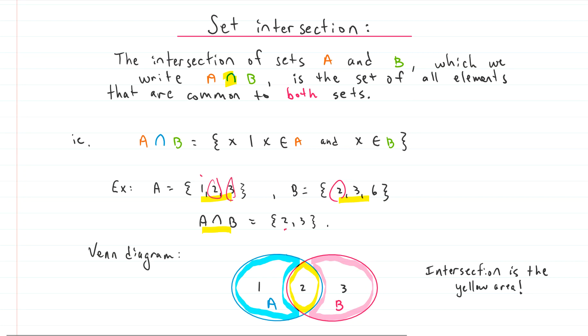How about 3? 3 is in A, 3 is in B. Awesome. It's listed in our set. And that's all for A, but B has a 6. 6 is not in A, so we can't list it in our A intersection B.